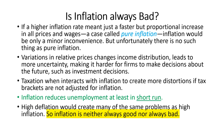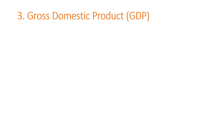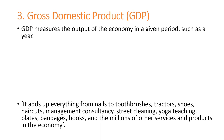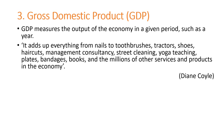The third basic concept is gross domestic product, or GDP. GDP measures the output of an economy in a given period — for example, in a year, a quarter, or a month. As one economist notes, GDP adds up everything from nails to toothbrushes, tractors, shoes, haircuts, management consultancy, street cleaning, yoga teaching, plates, bandages, books, and millions of other services and products in the economy.